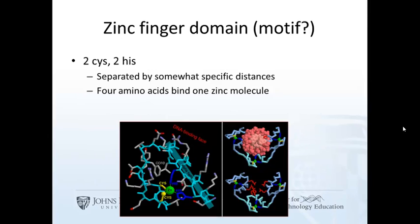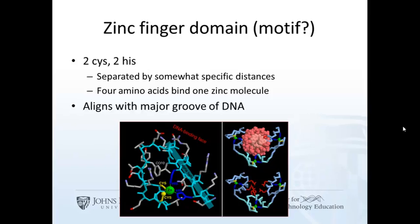Here is an example of a domain or motif: the zinc-finger domain. Usually it's called a domain, but by size it's closer to a motif. There are four important amino acids: two cysteines and two histidines — though three of one and one of the other often works as well. Those four amino acids surround and bind a zinc ion. That structure allows the protein to align with the major groove of DNA. Many, but not all, DNA binding proteins have this motif.